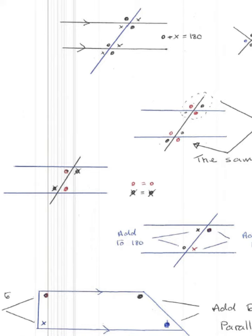But in a parallelogram, it's even slightly more complex because the angles at the top add up to 180 and the angles at the bottom add up to 180, because it's got two pairs of parallel lines.